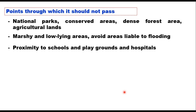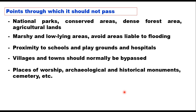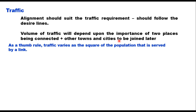Proximity to schools, playgrounds, hospitals should be avoided. Villages and towns should normally be bypassed. Places of worship and archaeological and historical monuments should also be avoided. Regarding traffic, alignment should suit traffic requirements. Origin-Destination (OD) surveys should normally be carried out to estimate traffic and draw desired lines, which the alignment should follow. Traffic volume depends on the importance of places connected, with traffic varying as the square of the population being served by a link.